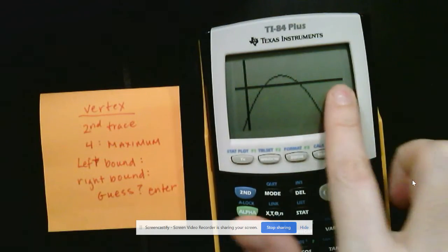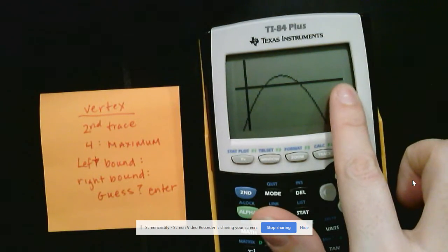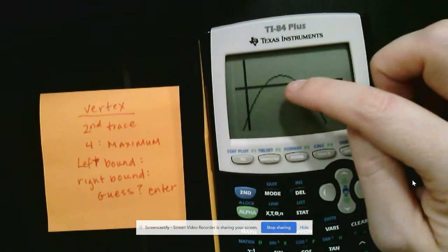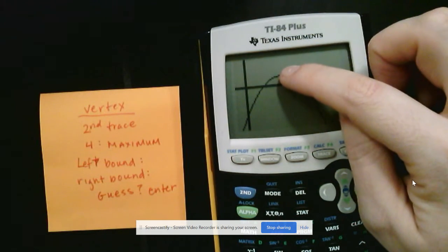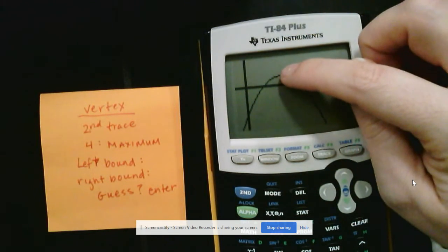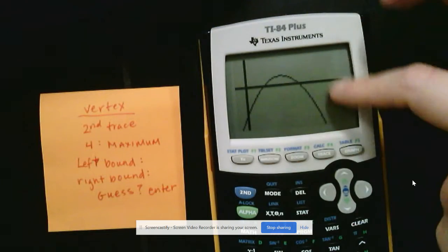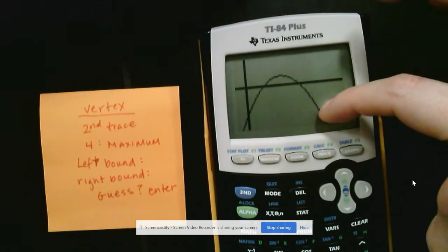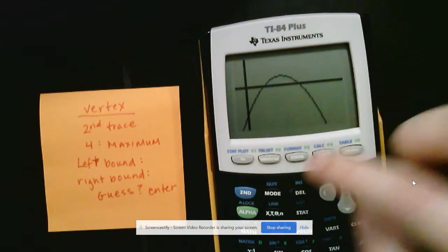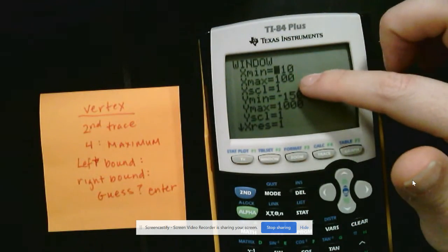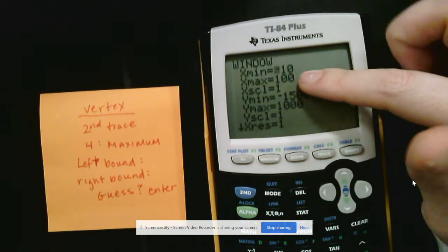When you are doing a vertex, anytime you're doing vertex, with these problems, your highest point is always going to be this maximum right here. There is no other higher points. So in order to do left bound and right bound for this, it's perfectly fine to just use whatever you have for your X min and your X max right here.